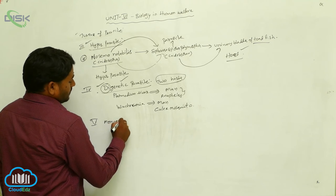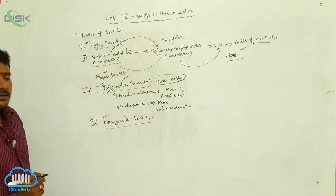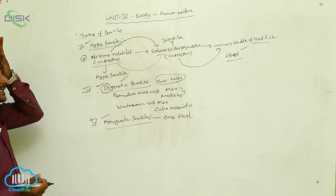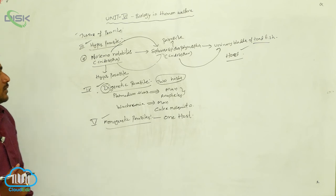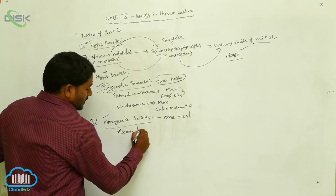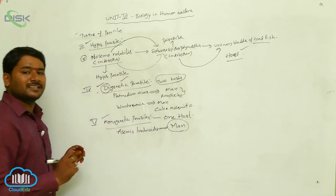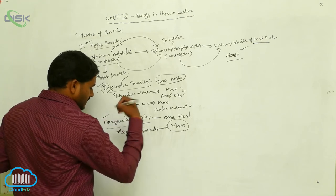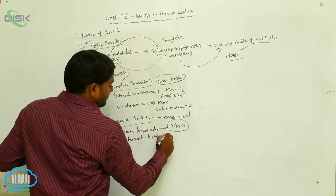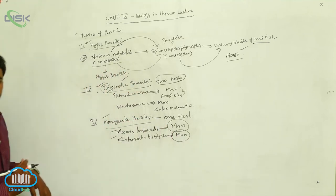The next type is the monogenetic parasite. Parasites which complete their life cycle in one host are called monogenetic parasites. For example, Ascaris lumbricoides completes its life cycle only in one host — man. Similarly, Entamoeba histolytica also completes its life cycle in one host — man.